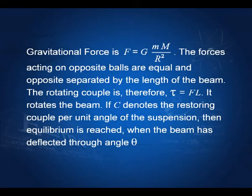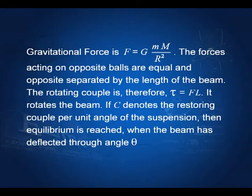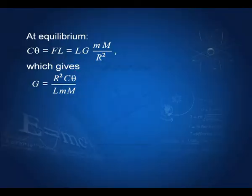The gravitational force has magnitude F = G·m·M / R², and the length of the beam is L. Therefore, the couple τ = F × L. If C denotes the restoring couple per unit angle of suspension, then equilibrium is reached when the beam has deflected through angle θ, giving: C·θ = L·G·m·M / R². From this, G = R²·C·θ / (L·m·M), where all quantities on the right-hand side are known, so G can be determined.